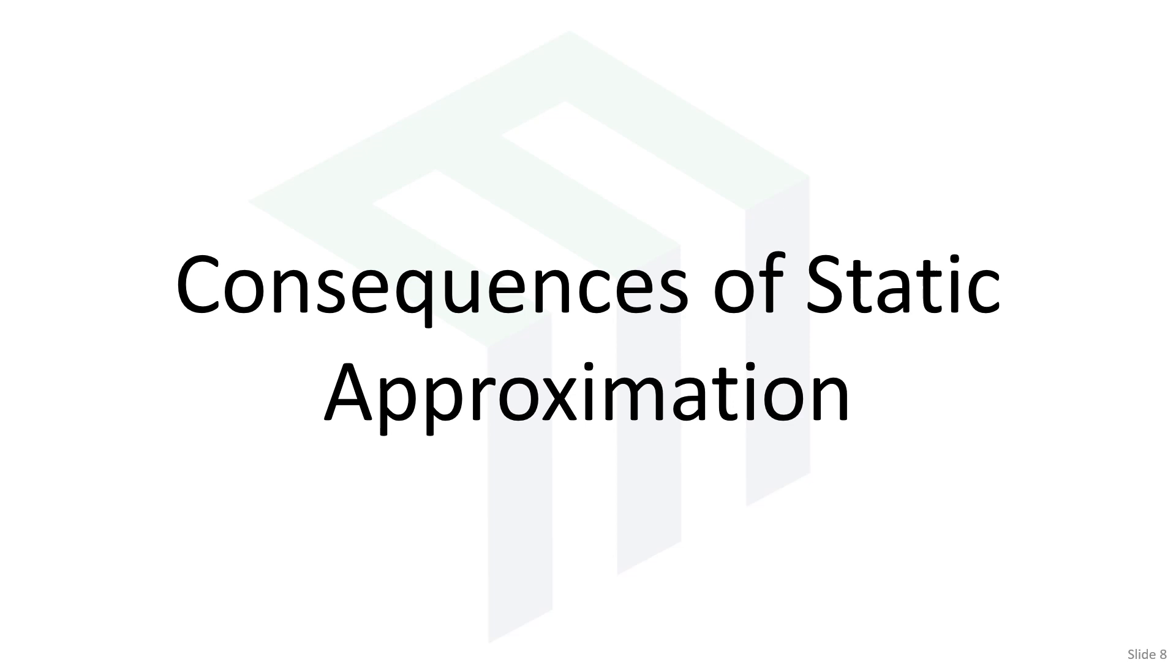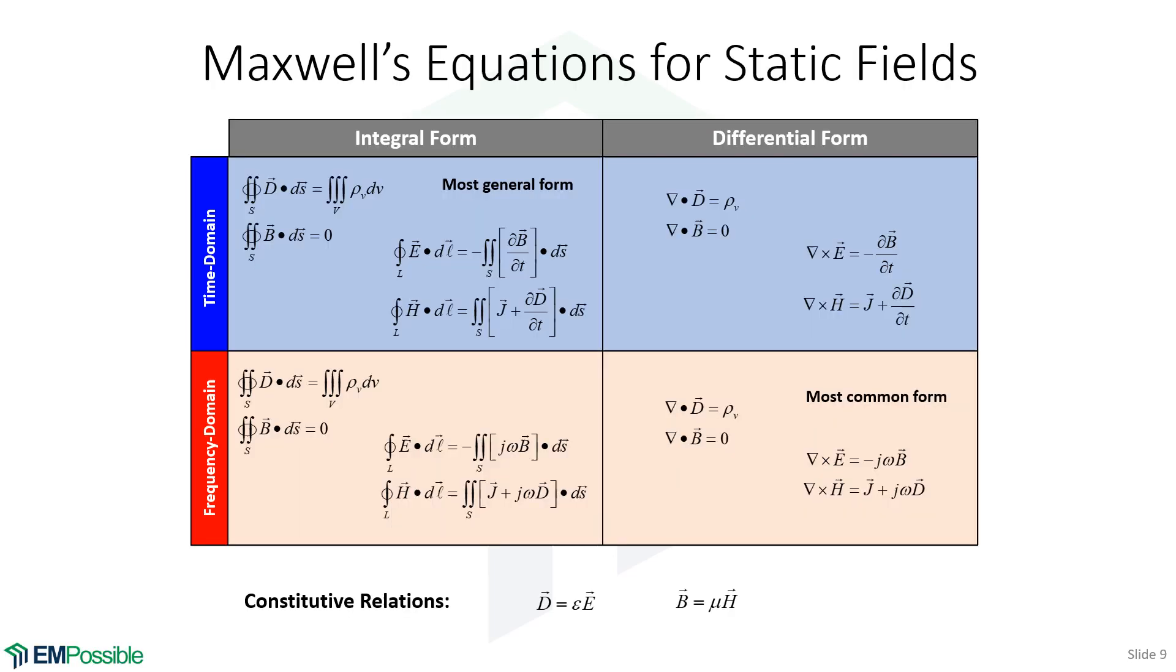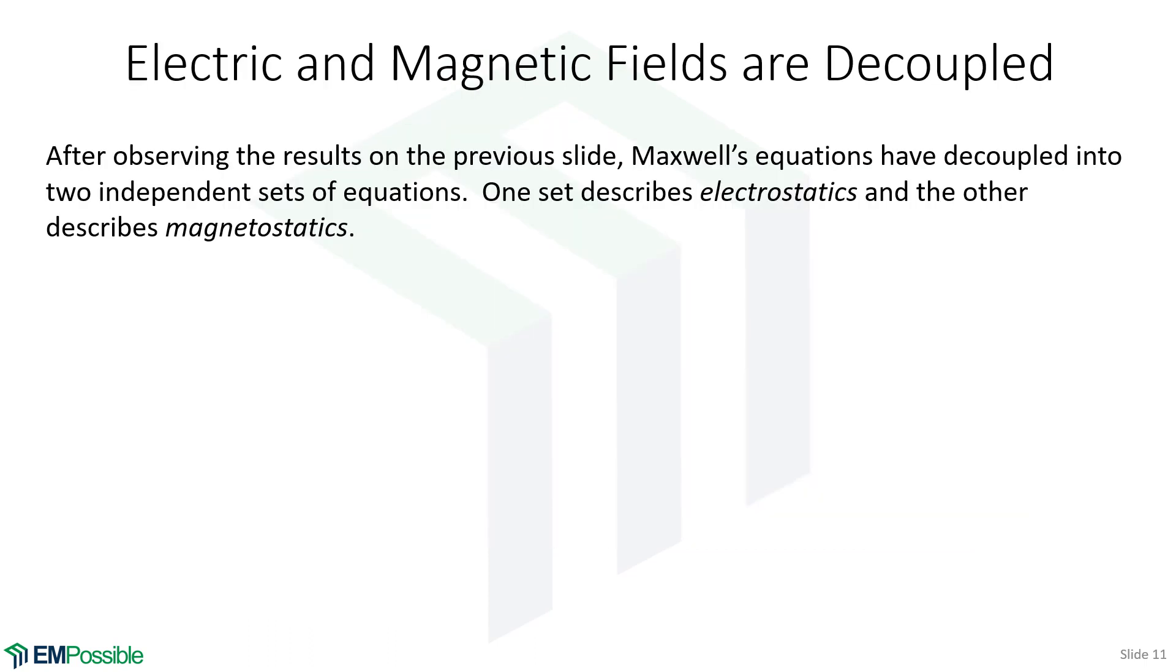Consequences of static approximation. Here, we're looking at Maxwell's equations in their general form. We see that we have time derivatives here and frequency. If we make the static approximation, that means we set all of the time derivatives to zero and we set omega to zero everywhere. Those terms will completely drop out of Maxwell's equations. They're gone. And if we analyze this long enough, what we'll see is that Maxwell's equations have decoupled into two sets of equations.